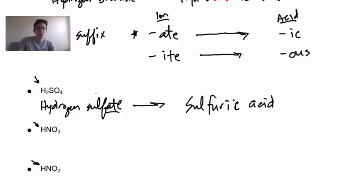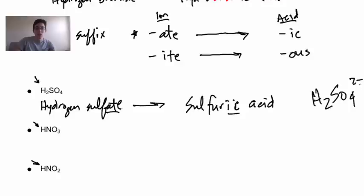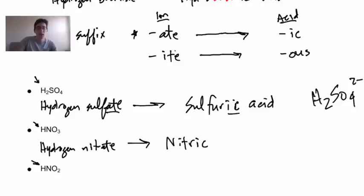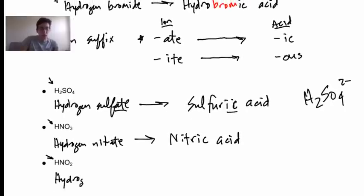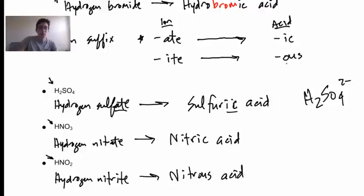...sulfuric acid. The -ate suffix becomes -ic. Note that sulfate (SO₄²⁻) is a two-negative ion, which is why it's H₂SO₄ and not just HSO₄ — we must be electrically neutral. HNO₃ is hydrogen nitrate, but as an acid becomes nitric acid — another -ate going to -ic. HNO₂ is nitrite, so hydrogen nitrite becomes nitrous acid — the -ite going to an -ous suffix.